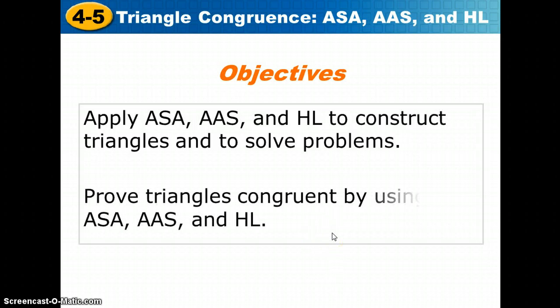Alright, let's take a look at these specific objectives. We are going to apply ASA and AAS, which ASA stands for angle side angle, AAS stands for angle angle side, and HL. HL stands for hypotenuse leg, and we'll talk about that more in a little while. We're going to use those theorems to construct triangles and to solve problems, and we will also prove that triangles are congruent by using those three.